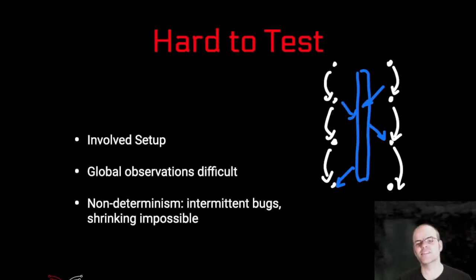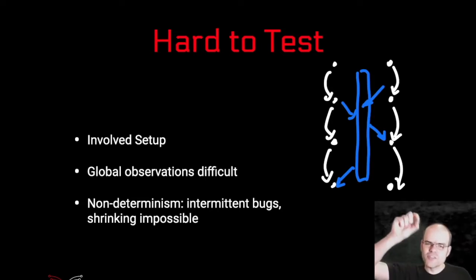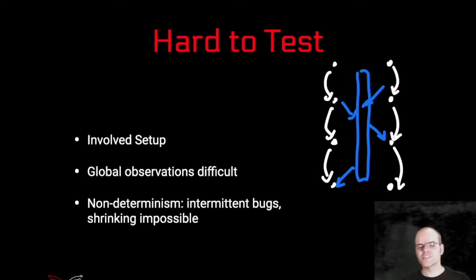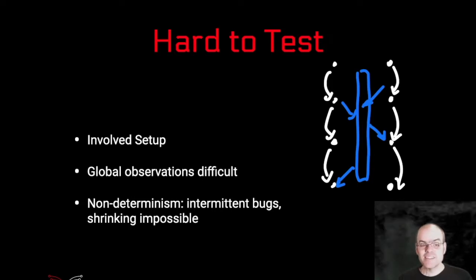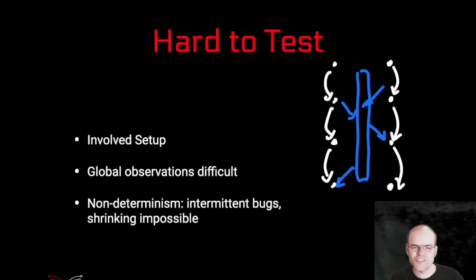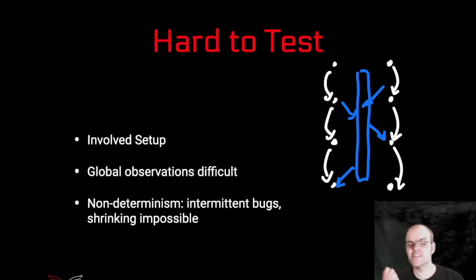It's even harder to test concurrent programs because you need to have those different threads running, and if they're running on different machines you have to provision different machines. Observing the total state of the program is more difficult if it's running on multiple machines. And this non-determinism is very hard for testing, because some of those bugs don't happen in every run — they only happen if the scheduling between those threads is just right, making it very hard to consistently detect bugs.